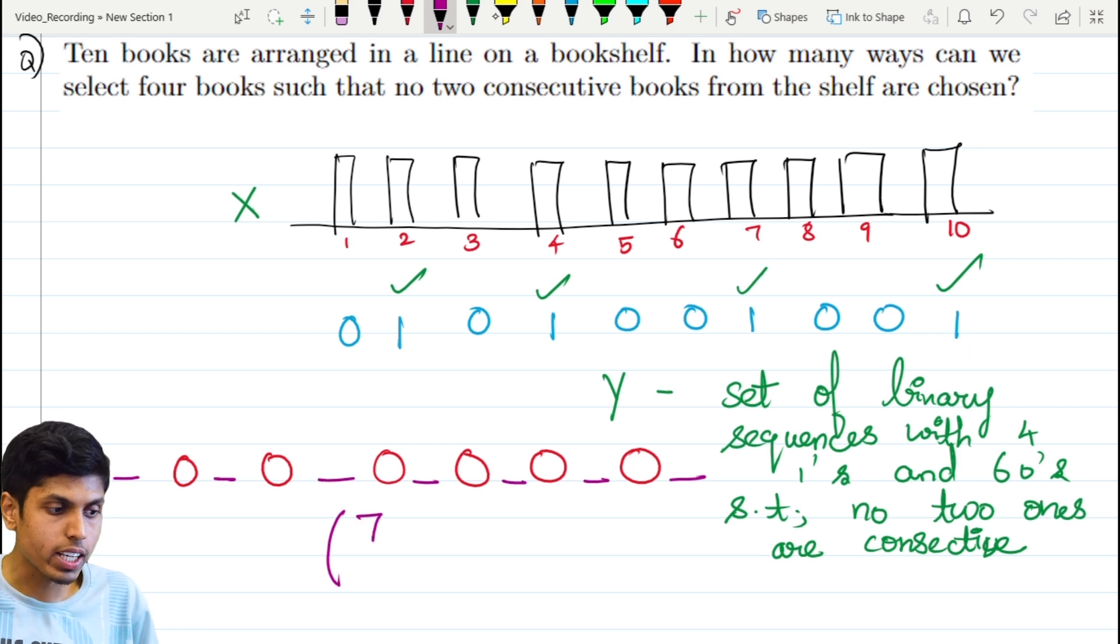The number of ways to select or choose 4 gaps would be 7 choose 4. Out of the 7 blanks, I am choosing 4 blanks to insert the ones. This is to ensure that the ones are not consecutive. So if I select certain blanks, the ones come in those positions and are not consecutive because we are filling up the blanks.